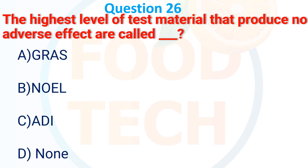The highest level of taste material that produces a number of adverse effects is called: A. GRAS, B. NOEL, C. ADI, D. None. The answer is B. NOEL.